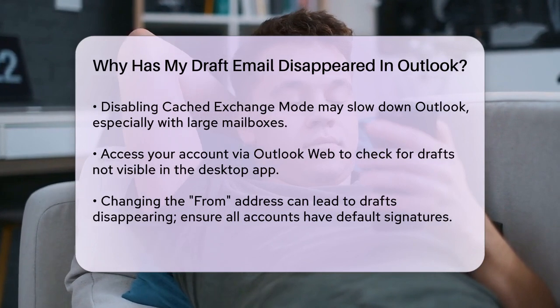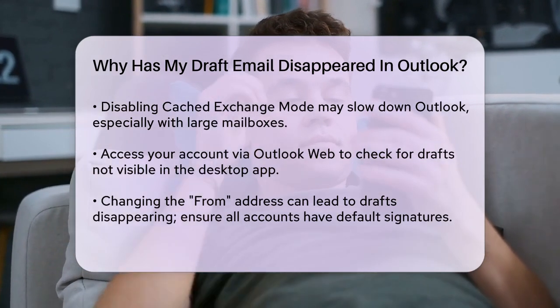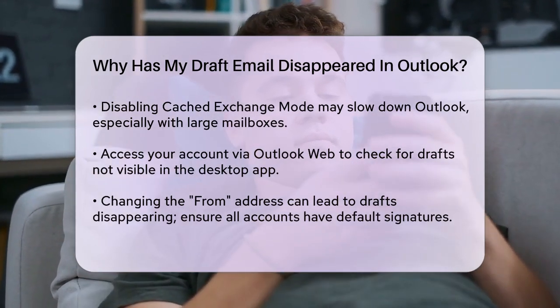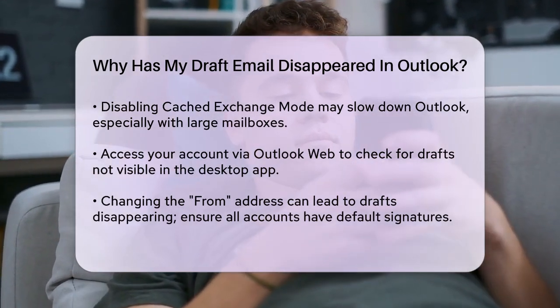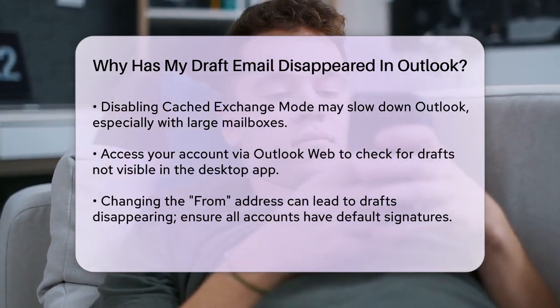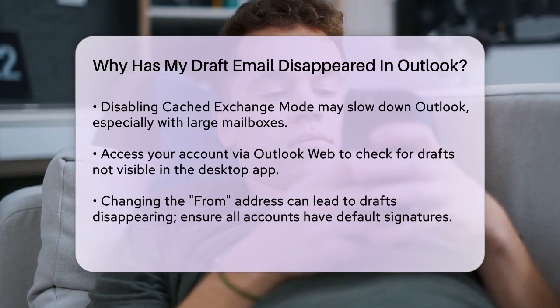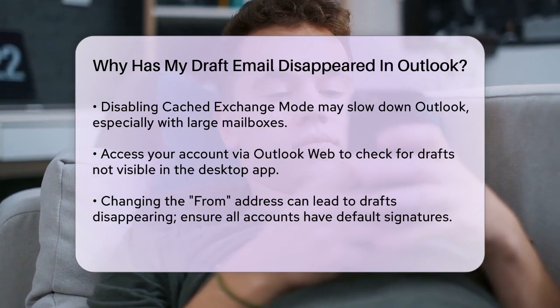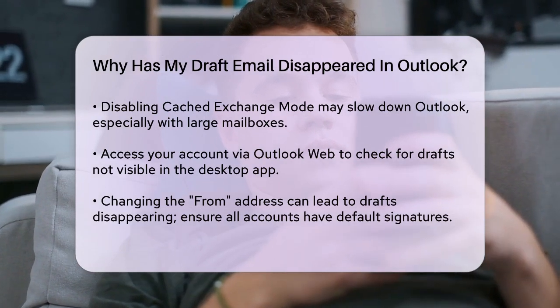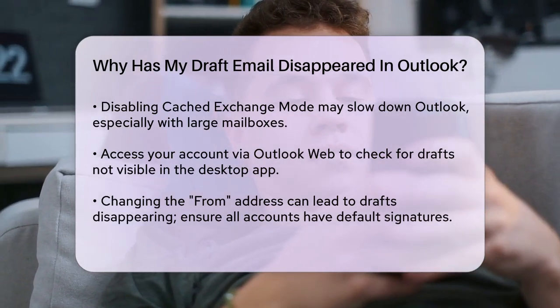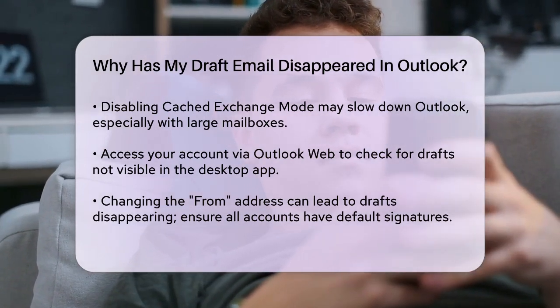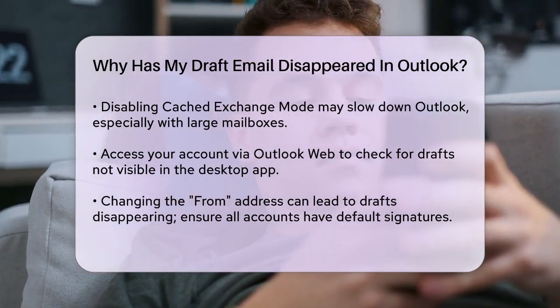If the above steps don't work, try accessing your account through Outlook Web. Go to the Outlook Web login page, sign in, and navigate to the Drafts folder. This can sometimes reveal emails that aren't showing up in the desktop application.